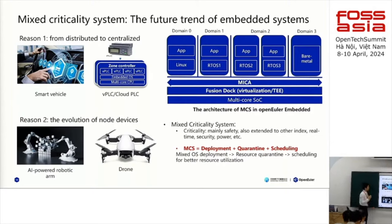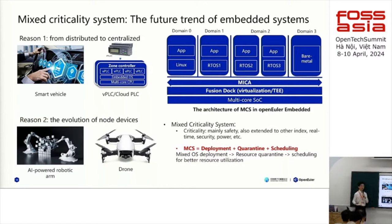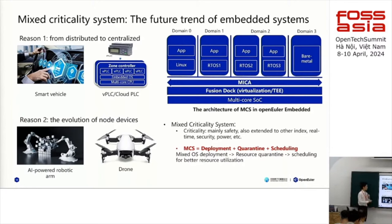We believe MCS is the future trend of embedded systems for two reasons. From the server side, hardware is evolving from distributed to centralized — for example, ECUs in automotive vehicles in the past could only do very simple tasks, but nowadays they are evolving into zone controllers controlling large areas of hardware, requiring more complex software. From the client side, we are having more and more complex node devices like drones — they must keep balance while taking photos and transmitting data back to the cloud, doing many complex things simultaneously, so they may need more than one OS for different applications.